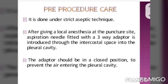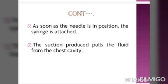The adapter should be in a closed position to prevent air from entering the pleural cavity. As soon as the needle is in position, the syringe is attached. The suction procedure pulls the fluid from the chest cavity, creating negative pressure, which causes the fluid to come out. Dedicated pleural manometers are used to measure pleural pressure during Thoracocentesis.